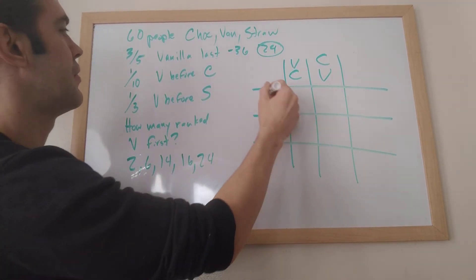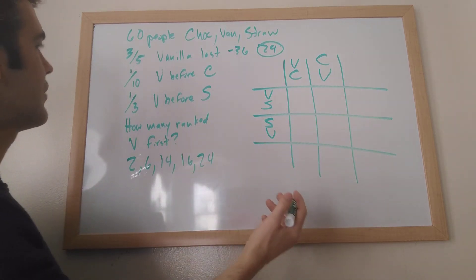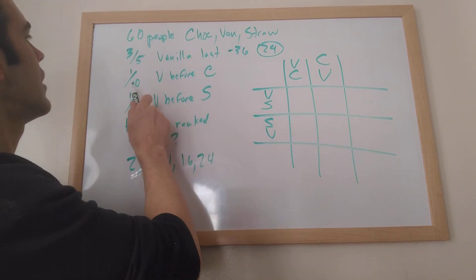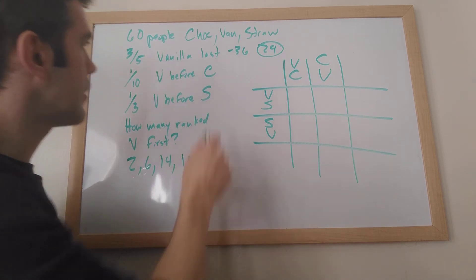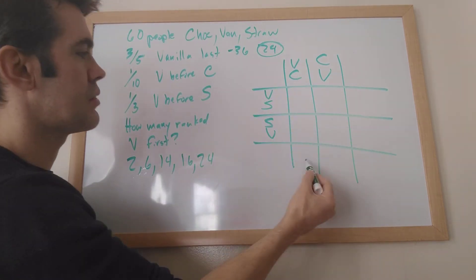And now I can just fill in all the information that they've given me. So, let's see, it says one-tenth ranked vanilla before chocolate. So one-tenth of 60, not 24 but the total. One-tenth of 60 is six. Vanilla before chocolate, that goes down here.